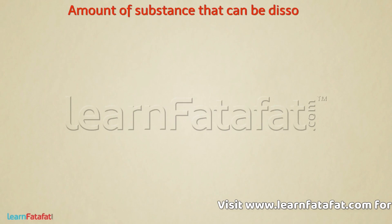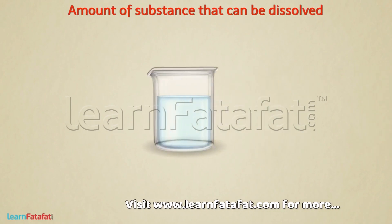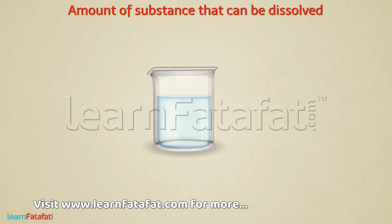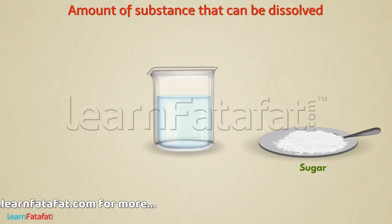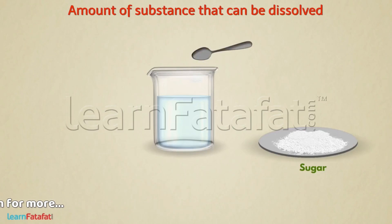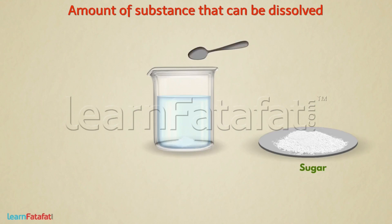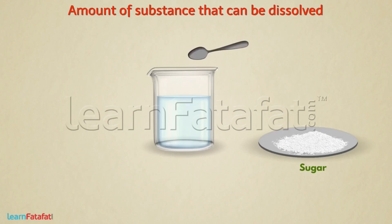For that, we will perform an activity. Take a beaker containing water, a sufficient amount of sugar, and a tablespoon. Take a tablespoon of sugar and dissolve it in water. After it dissolves completely, take another tablespoon of sugar and dissolve it. Repeat the activity continuously. After dissolving a few tablespoons of sugar, you will notice that no more sugar can be dissolved in water.